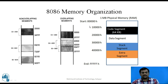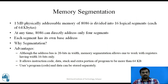Since the physical address is 20 bits, it can be represented in hexadecimal using 5 hex digits. The starting address of memory is 00000H up to the end at FFFFFH. The base address of the Code Segment is 10000H, the Data Segment base address is 20000H, the Stack Segment base address is 30000H, and the Extra Segment base address is 40000H. So the 1 MB physical addressable memory of the 8086 is divided into 16 logical segments each of 64 KB, and at any time the 8086 can directly address only 4 segments, each with its own base address.